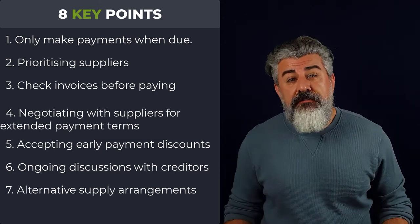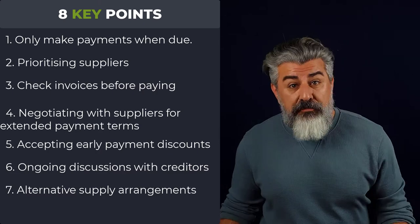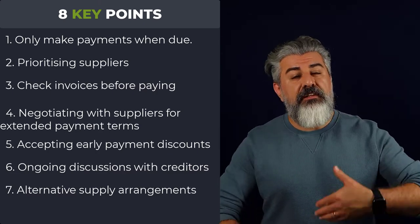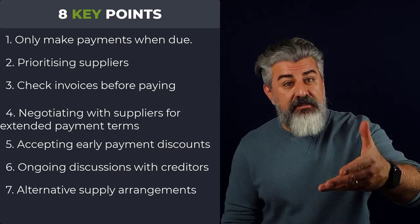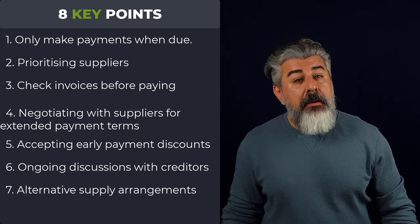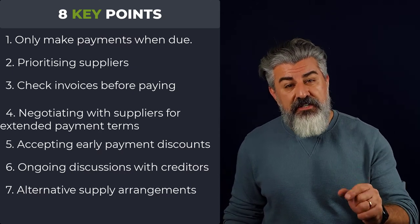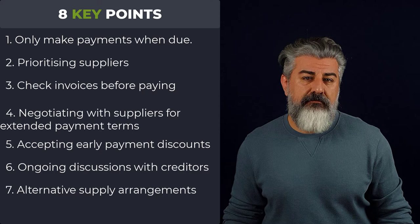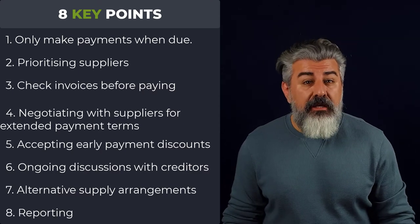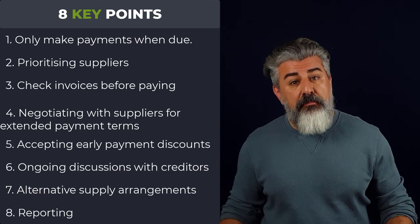Seven: consider alternative supply arrangements. The use of consignment inventory means the supplier is not paid for the products until they are sold or used, thereby delaying the payment. This may be an alternative method for purchasing inventory, but it is dependent on the ability of the supplier to support such an arrangement.